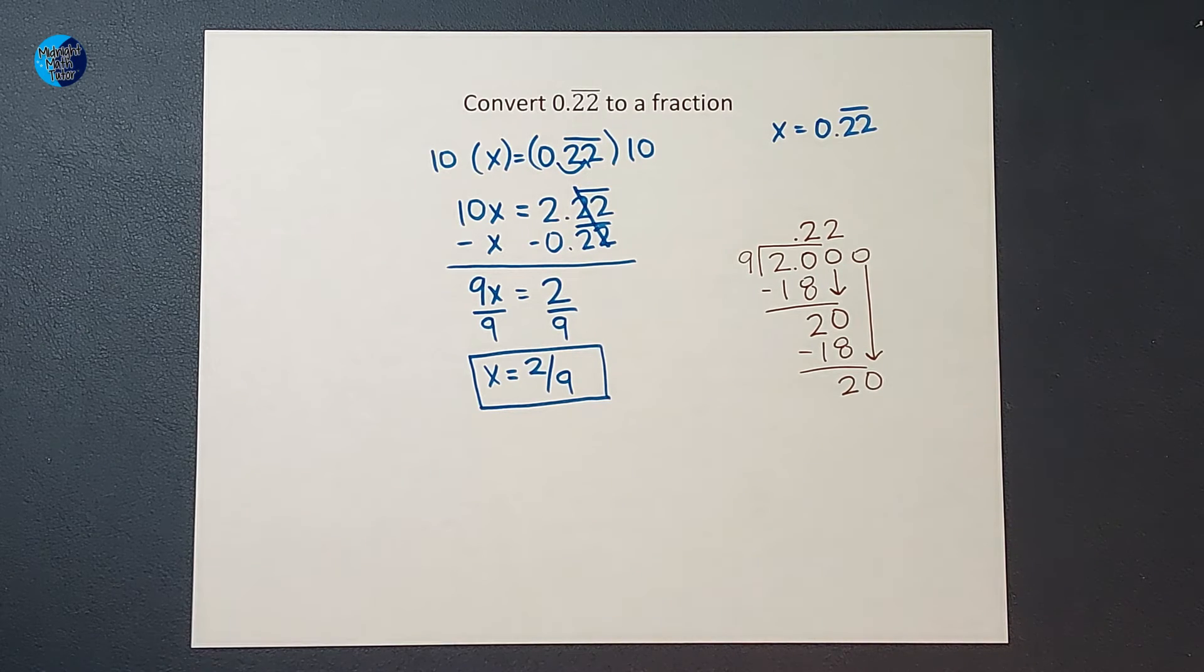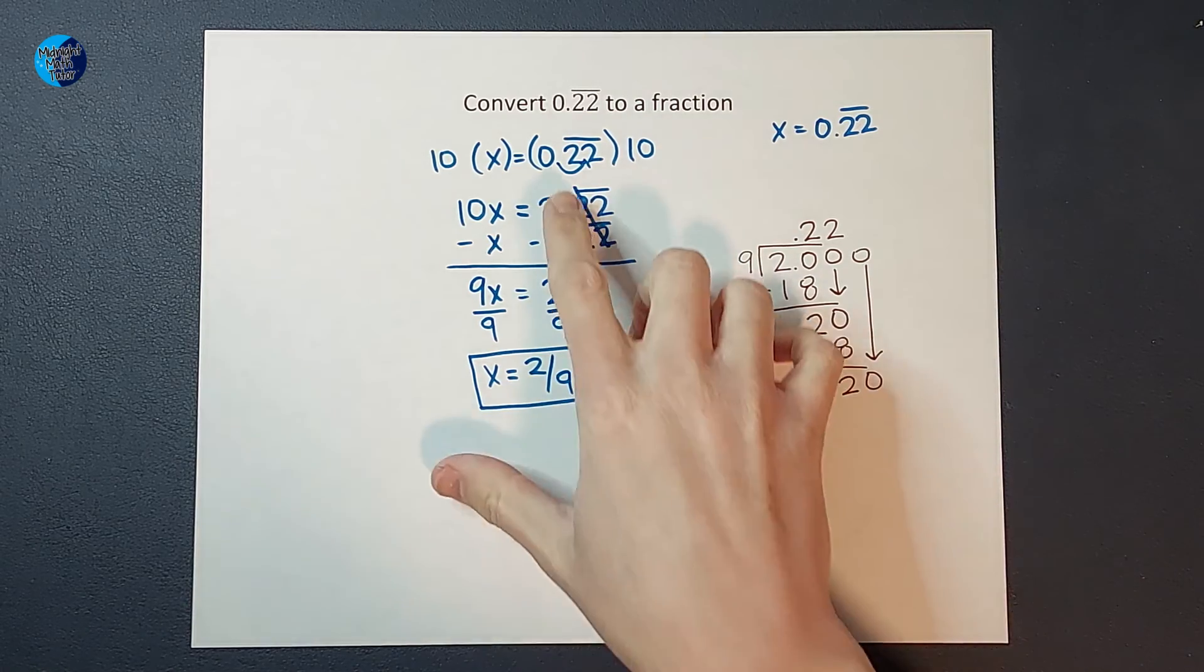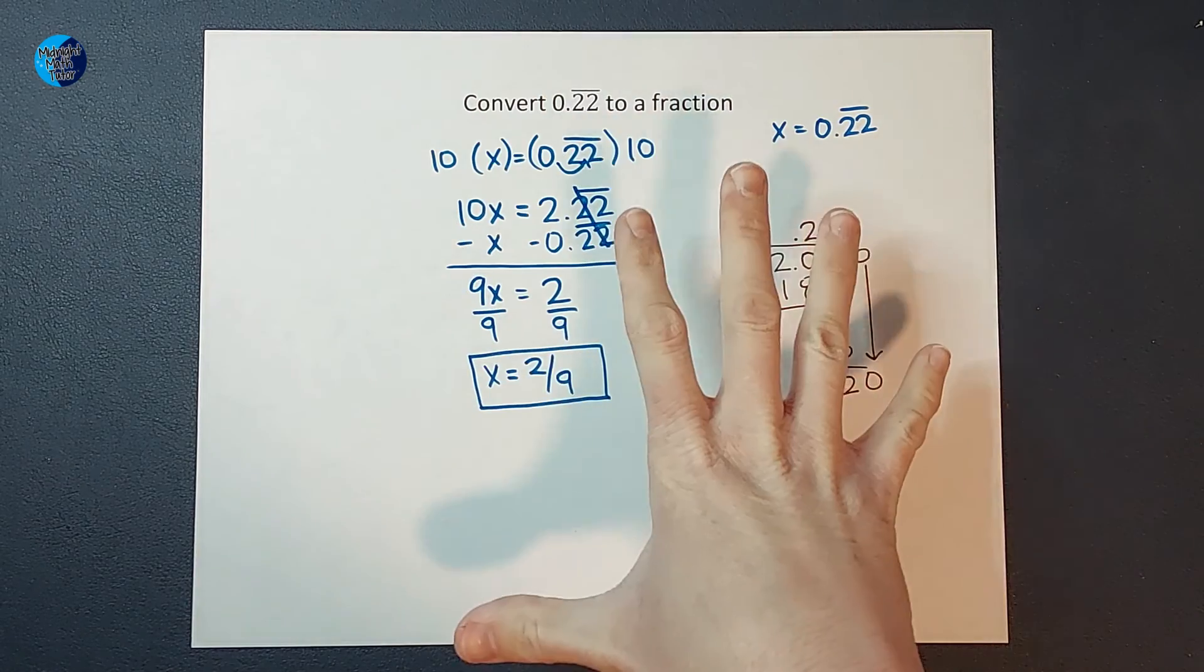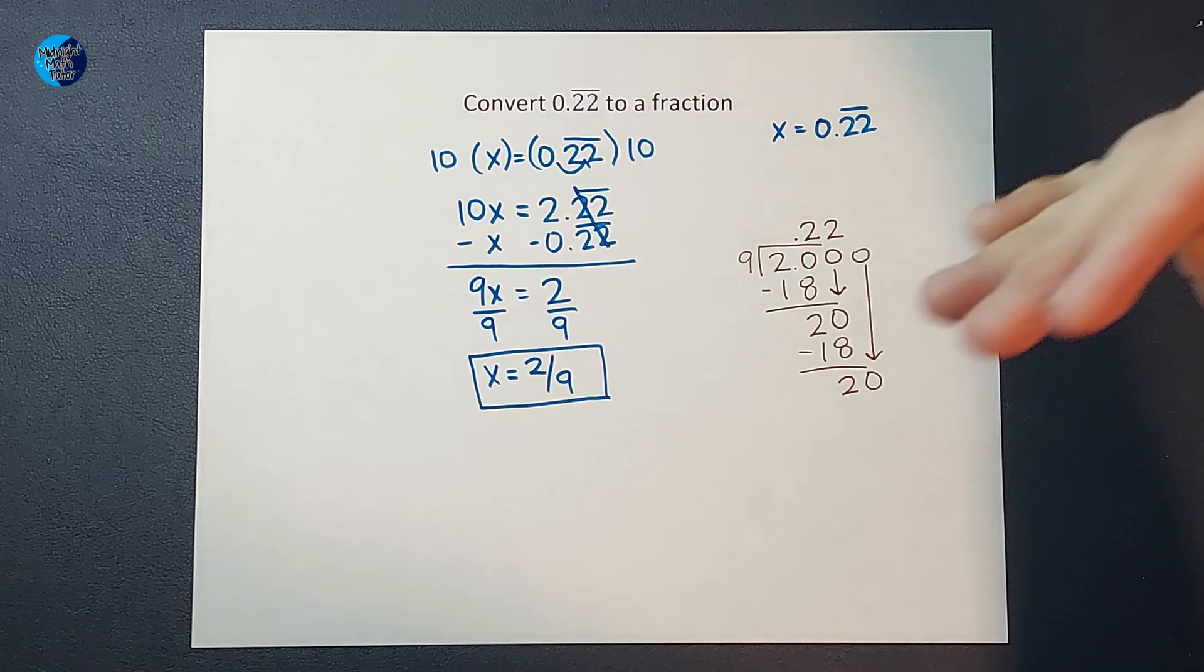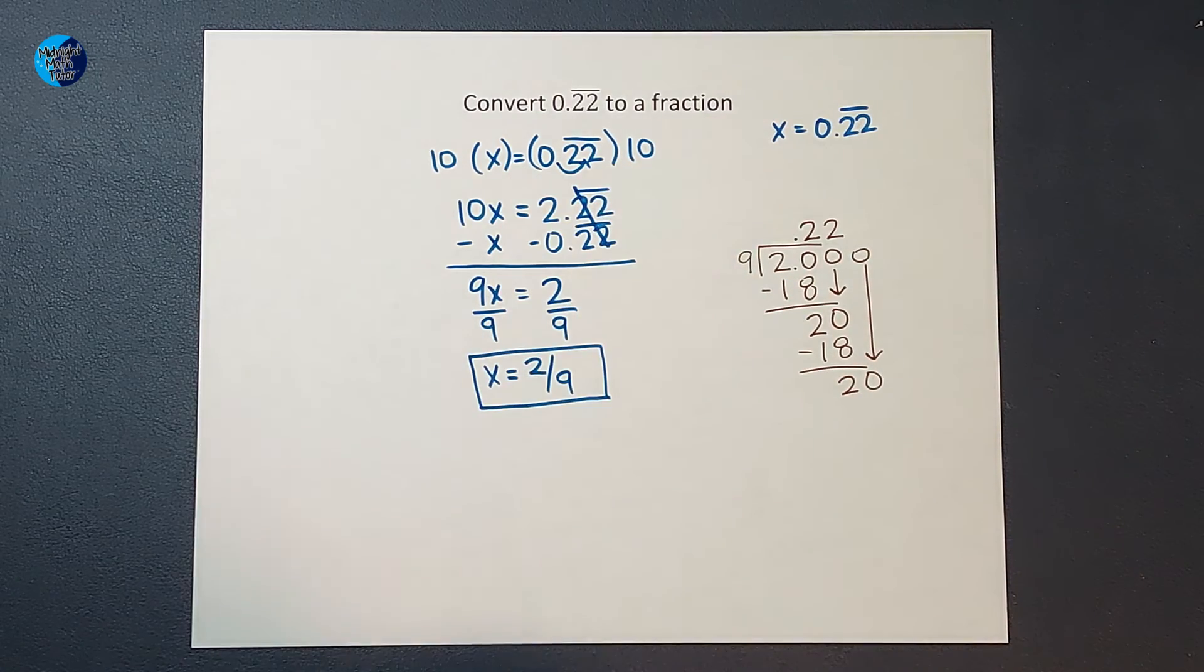Hopefully this made sense. If you need some more examples, like if it's two different numbers repeating, like 0.23, 23, 23, or if there's a number out front here, I have some other examples I will link for you. Thanks.